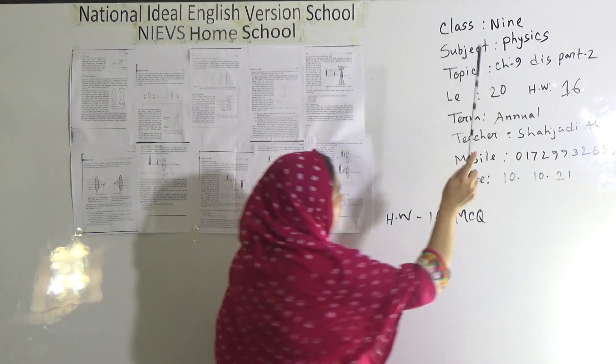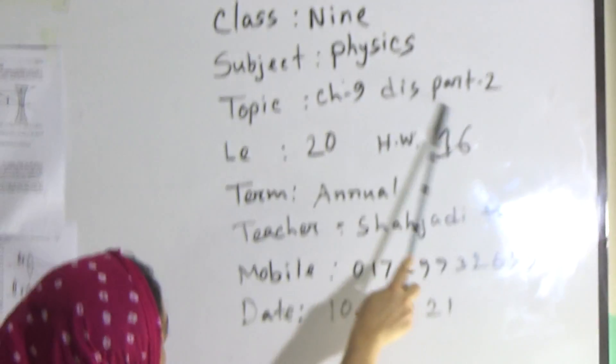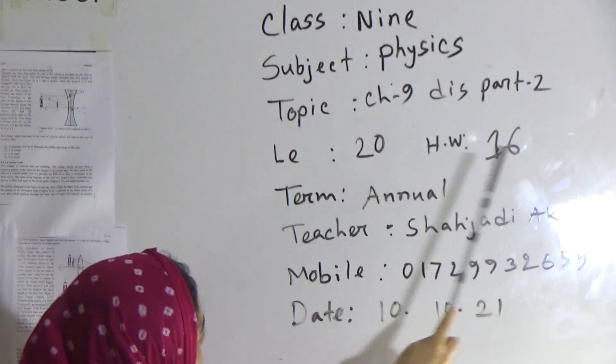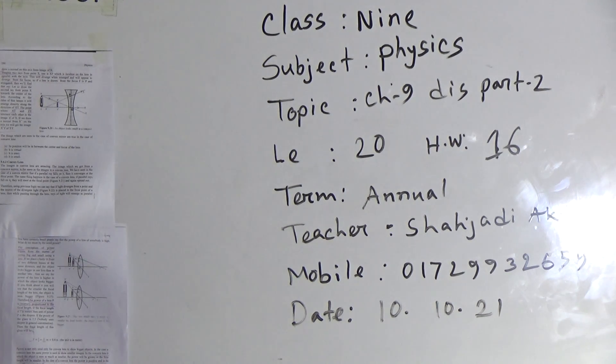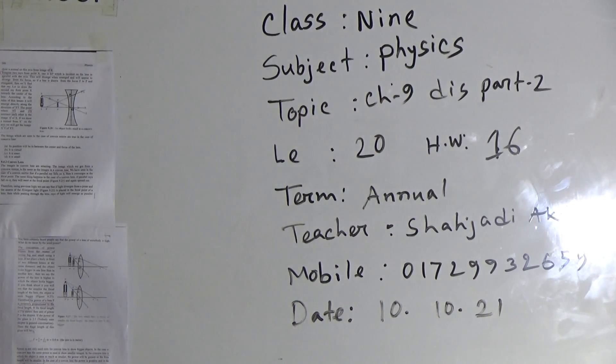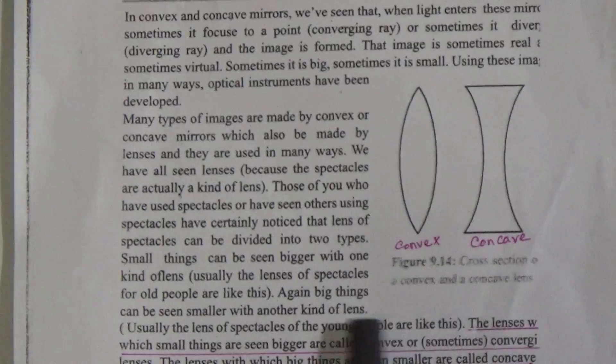My dear students, our today's topic is Chapter 9, Discussion Part 2. Today's Lecture No. 20 and HW No. 16. Let's start our class. First of all, we will know the types of lenses.